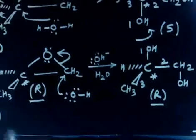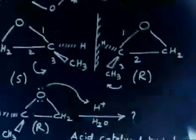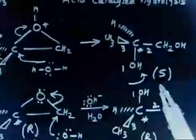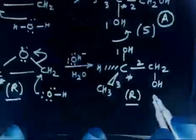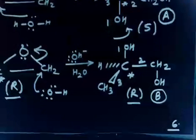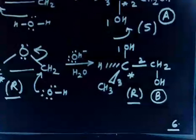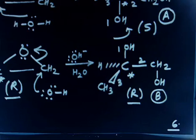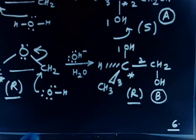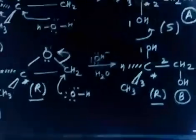Part D of the question asks: the product from acid-catalyzed hydrolysis is A, and the product from base-catalyzed hydrolysis is B. Explain why A and B have opposite optical rotation.